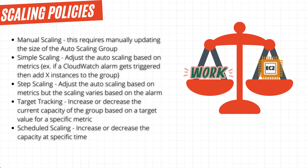Next, we have target tracking, which lets us define a target value. For example, let's say we define the policy to state that we want the auto-scaling group to keep the CPU utilization at 70%. Then the auto-scaling group will add or remove instances to keep us around that 70% mark. Keep in mind that this is an aggregate value across the group, meaning this is across all the instances in the group.